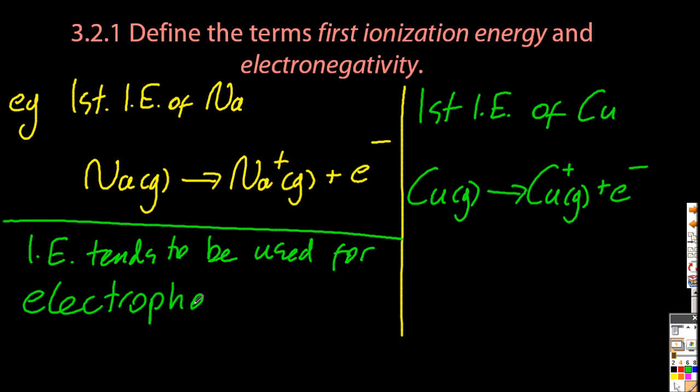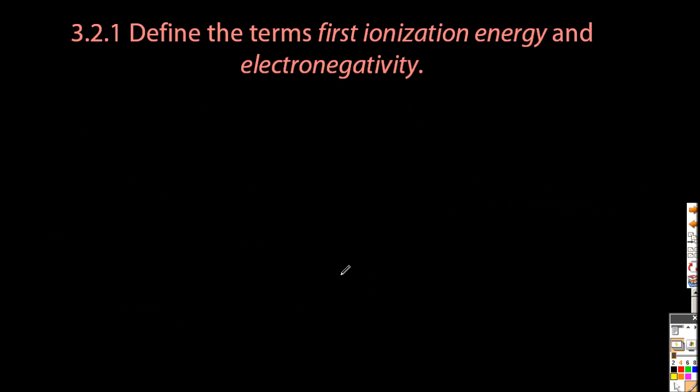Ionization energy tends to be used for things that hate electrons, electrophobes, and almost always those things are metals.